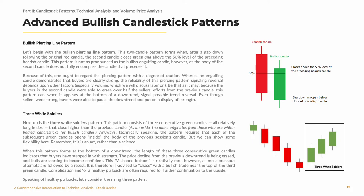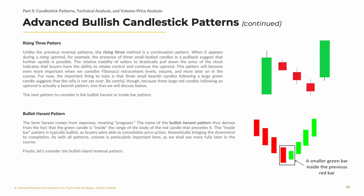Speaking of healthy pullbacks, let's consider the rising three pattern. Unlike the previous reversal patterns, the rising three method is a continuation pattern. When it appears during a rising uptrend, the presence of three small-bodied candles in a pullback suggest that further upside is possible. The relative inability of sellers to drastically pull down the price of the stock indicates that buyers have the ability to retake control and continue the uptrend. This pattern will become even more important when we consider Fibonacci retracement levels, volume, and more later on in the course. For now, the important thing to note is that three small bearish candles following a large green candle suggest that the rally is not yet over. Be careful, though, because three large red candles following an uptrend is actually a bearish pattern, one that we will discuss below.